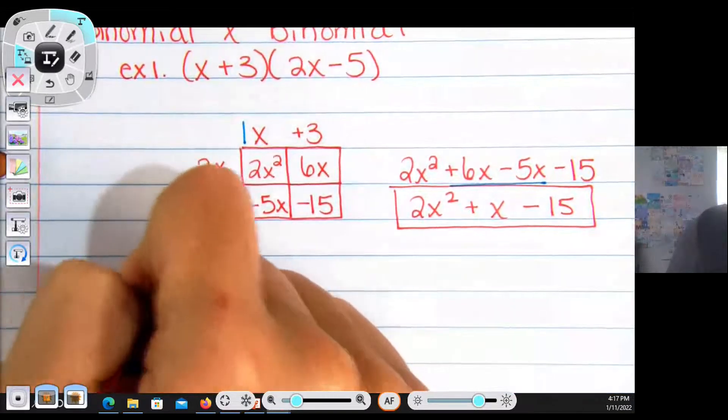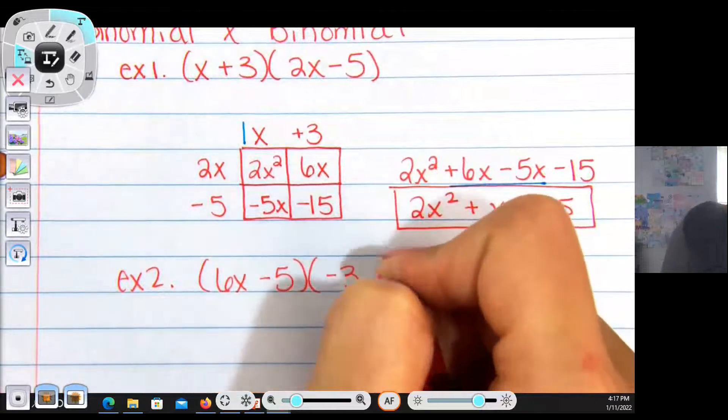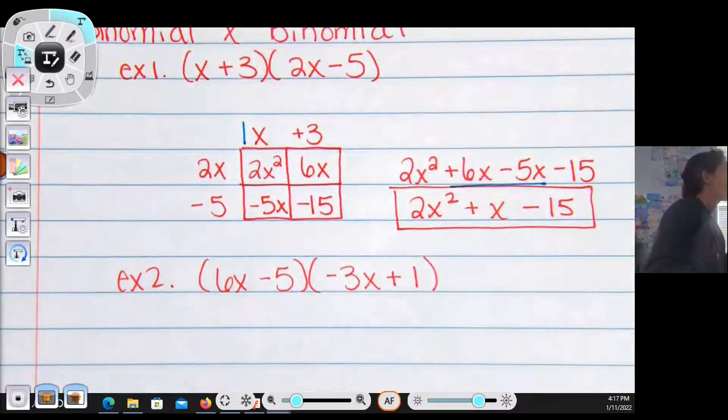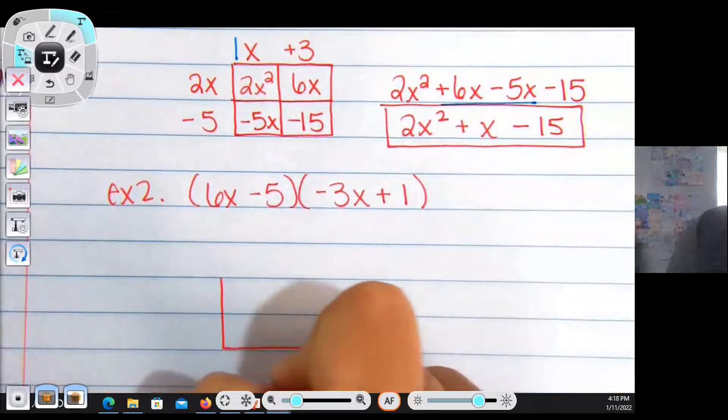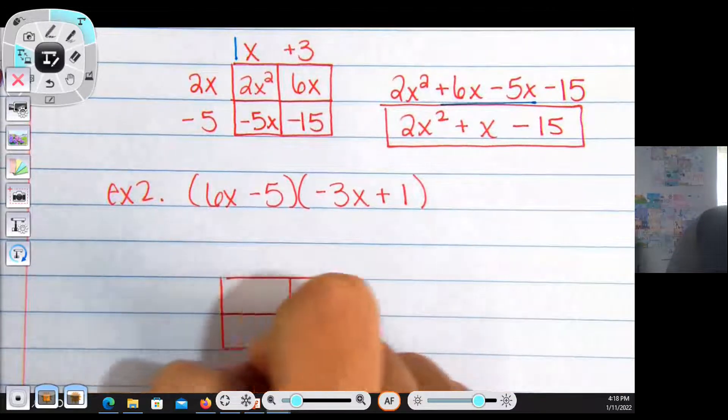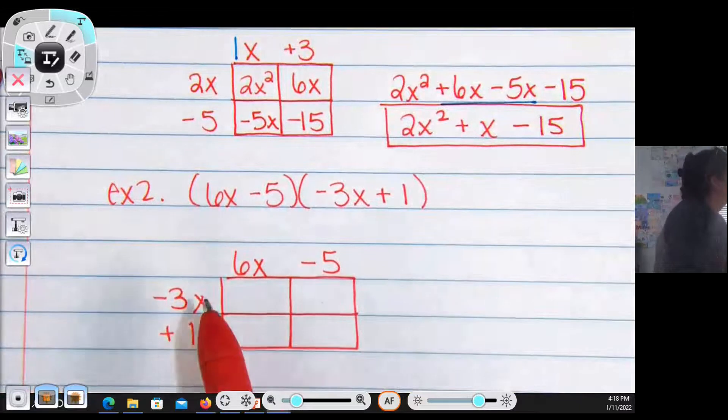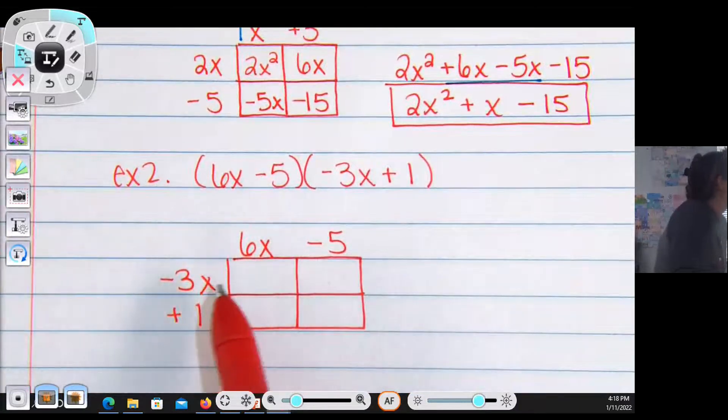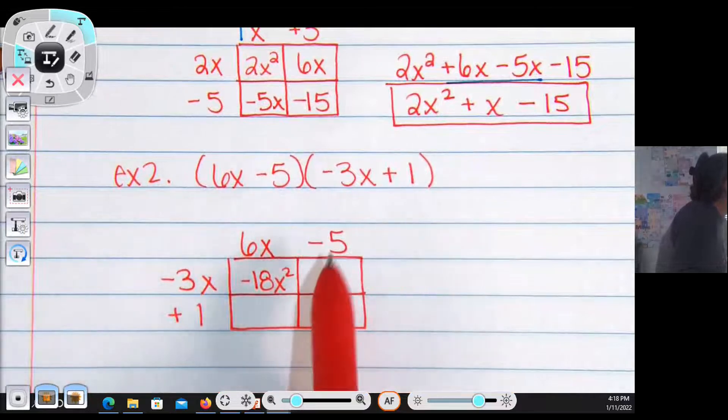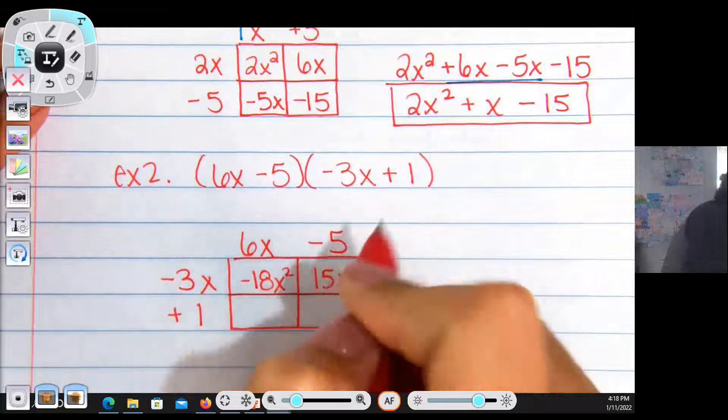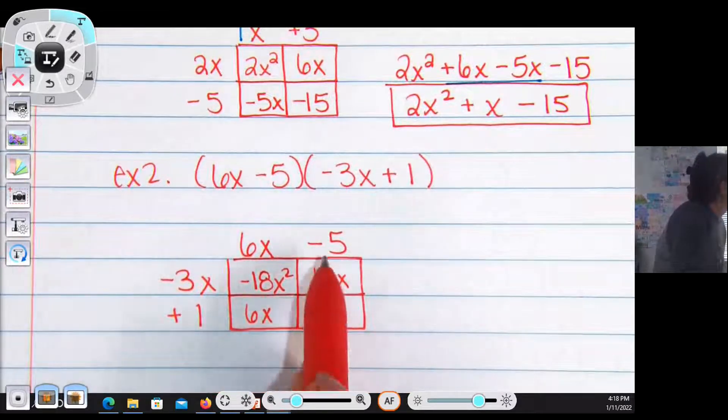Let's do another one of these. Example 2. 6x minus 5 multiplied by negative 3x plus 1. So this is a binomial times a binomial, so I'm going to make a 2 by 2 box. I'm going to multiply to fill in the box. Negative 3x multiplied by 6x is negative 18x². Negative 3x multiplied by negative 5 makes positive 15x. 6x times 1 is 6x, 1 multiplied by negative 5 is negative 5.